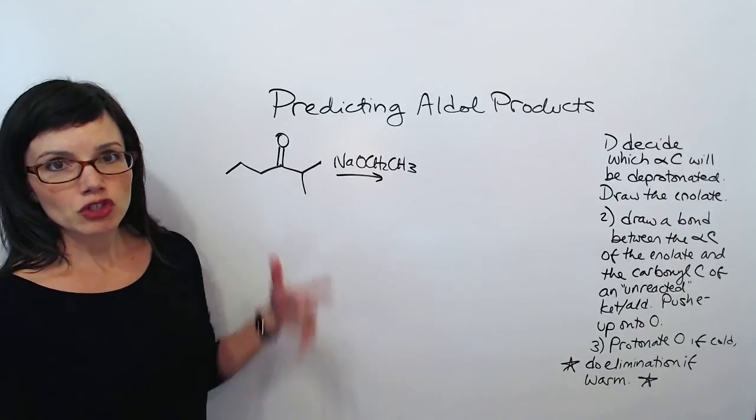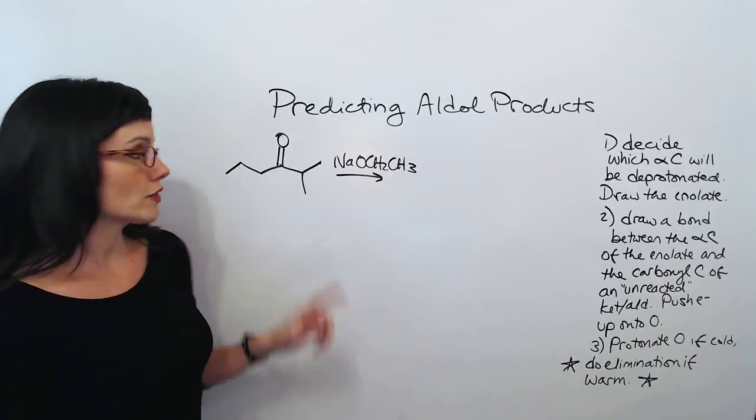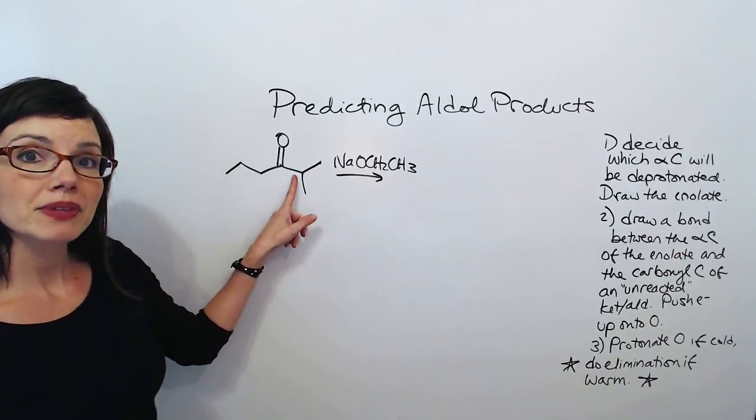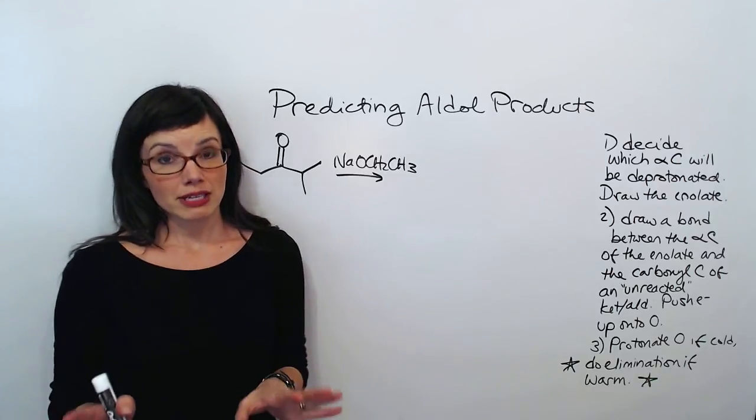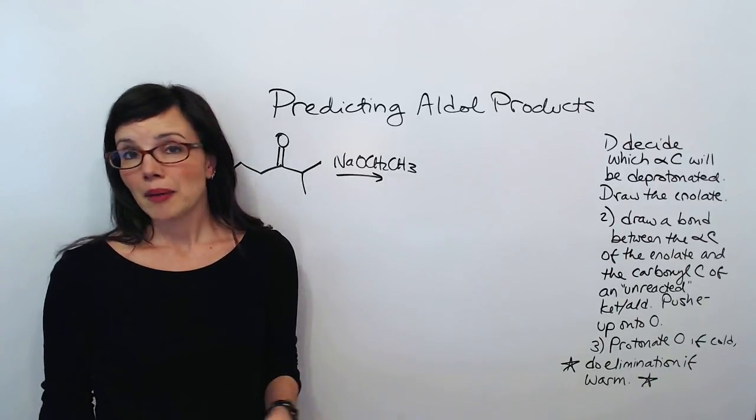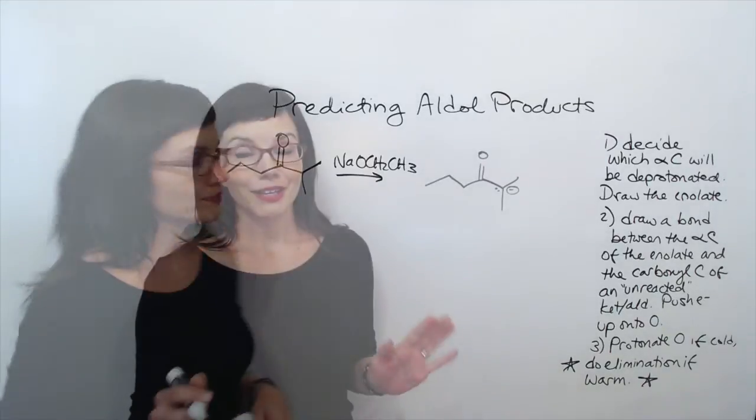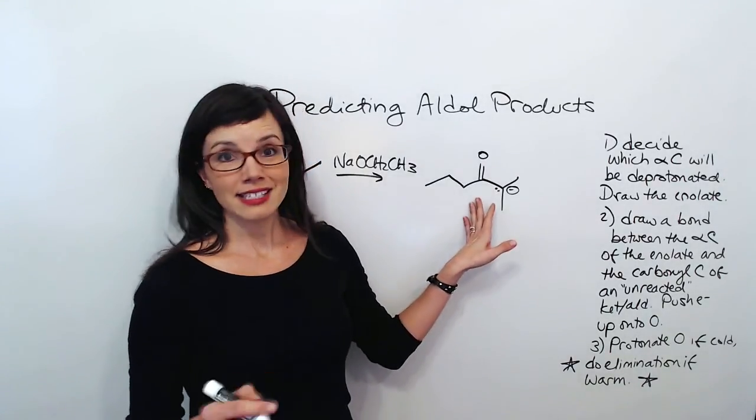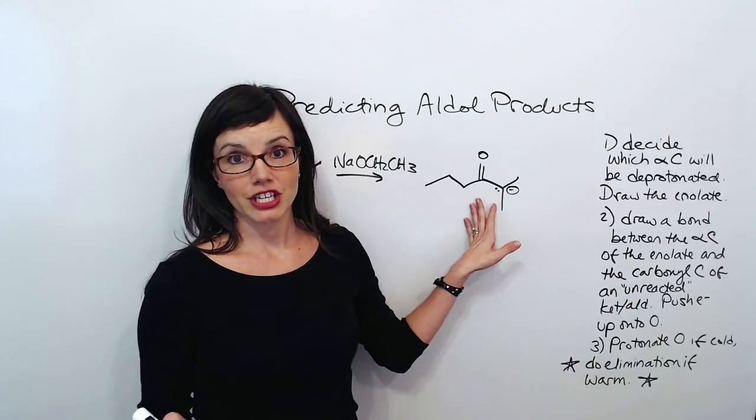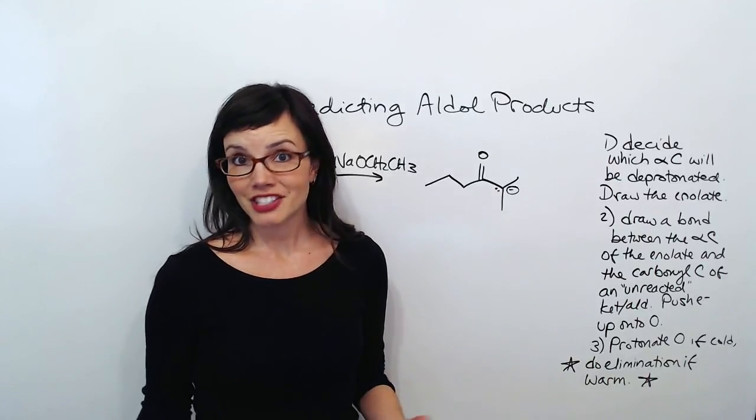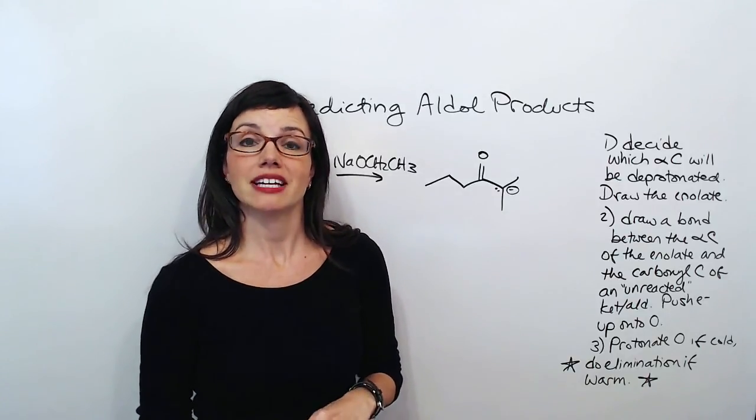And I'm just going to draw the enolate that's going to result from the deprotonation of that carbon. Now, there are two resonance structures that I could draw, but I'm only going to draw the one with the negative charge on the carbon. Now, it's true that this isn't the more stable resonance structure. The one with the negative charge on the oxygen is the stable one, and it's the one that the attack comes from.